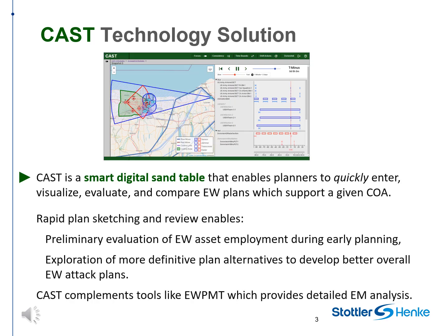CAST is a smart digital sand table that enables planners to quickly enter, visualize, evaluate, and compare EW plans which support a given COA. Rapid plan sketching and review enables preliminary evaluation of EW asset employment during early planning and exploration of more definitive plan alternatives to develop better overall EW ATT&CK plans. CAST complements tools like EW PMT, which provides detailed EM analysis.